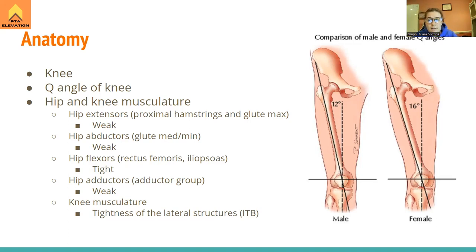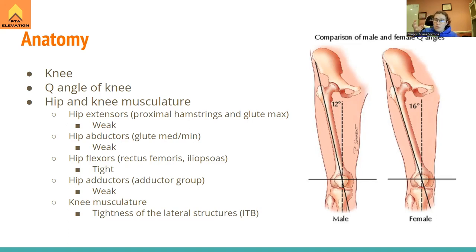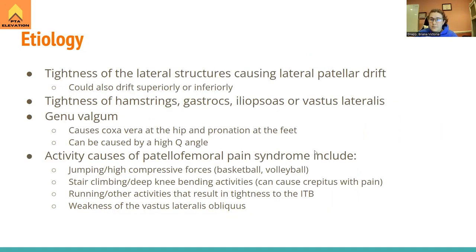Tight lateral structures at the knee include the IT band, vastus lateralis, and lateral retinaculum. If we palpate each side of the knee joint, we have the medial retinaculum — sensitive because the MCL is right there — and the lateral retinaculum on the outside. Our LCL is lower as an extra-capsular ligament. All those tight lateral structures are pulling the patella laterally. The only thing pulling it medially is the VMO.